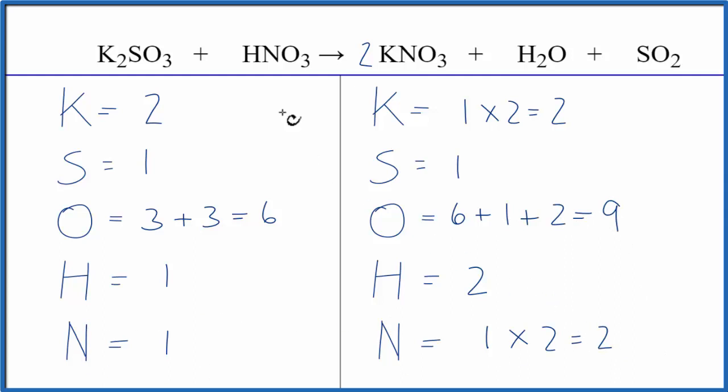Let's fix the nitrogens. We could put a two in front of the nitric acid, then we'd have one times two for the hydrogens, and that actually fixes the hydrogens. One times two, so now our nitrogens are good.